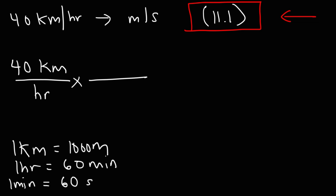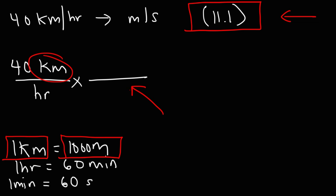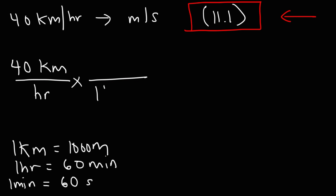Write another fraction. We want the unit kilometers to cancel and the unit meters to remain. There are two sides to this fraction — one kilometer and 1,000 meters. Since we want the unit kilometers to cancel and it's on the top, we need to put kilometers on the bottom as well. So put one kilometer on the bottom and 1,000 meters on the top, so the unit kilometers cancel. Now we have meters, which is what we want.